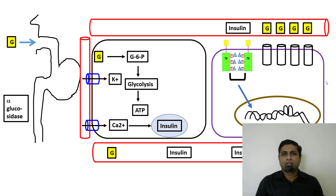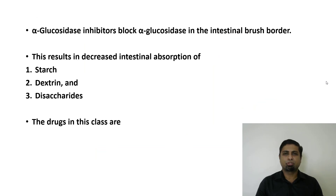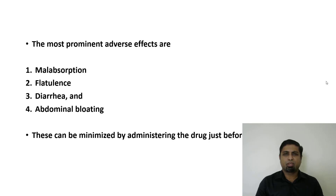Looking at the first target — the brush border of the intestinal epithelium — these cells produce an enzyme known as alpha-glucosidase. Normally, this enzyme breaks down more complex sugars like starch, dextrin, and disaccharides into smaller, more easily absorbed sugars. Blocking this enzyme causes these sugars to fail to get absorbed. This is the mechanism of alpha-glucosidase inhibitors, examples of which include acarbose, voglibose, and miglitol. These drugs can produce distressing flatulence, diarrhea, and abdominal bloating, which can be minimized by administering the drug with meals, and these adverse effects generally wane with long-term use.